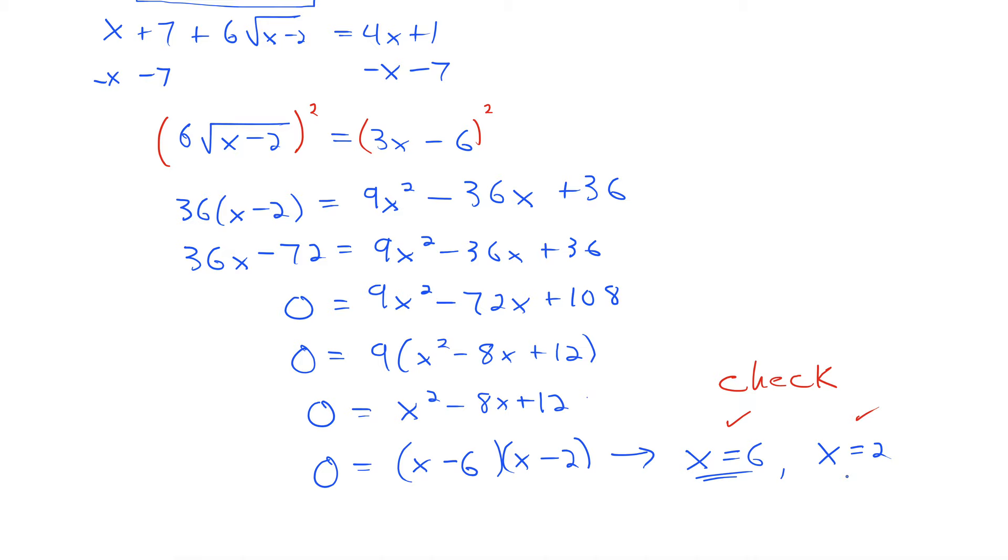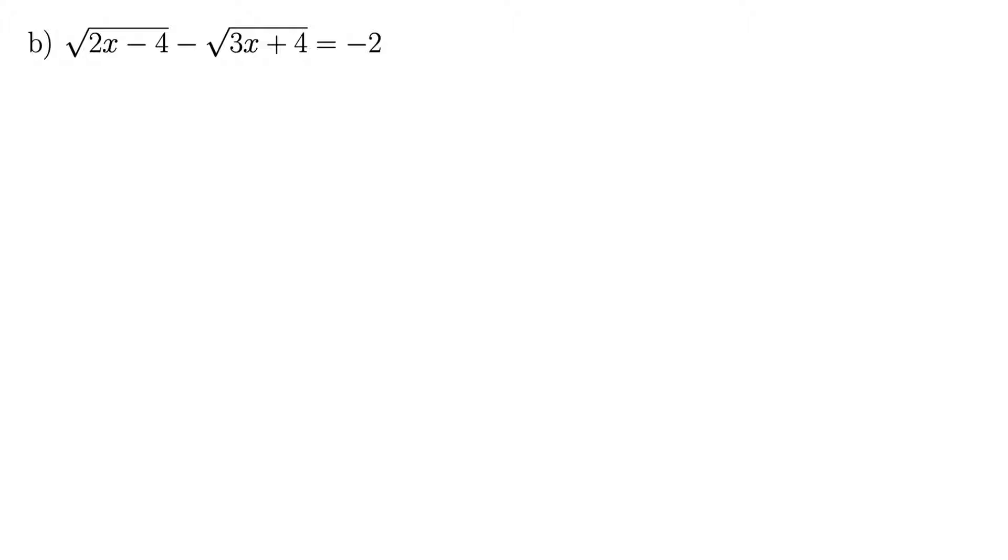For B, we have radical 2x minus 4 minus radical 3x plus 4 equals negative 2. Step 1, get one of these radicals on each side. So let's add radical 3x plus 4 to both sides. This gives radical 2x minus 4 equals radical 3x plus 4 minus 2. Always make sure you get one radical on each side of the equal sign before you square both sides.